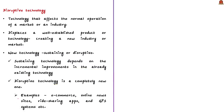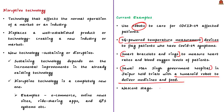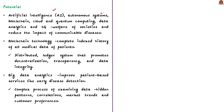According to the editorial, disruptive technology is already being used in the fight against the pandemic. Some hospitals use robots for care of COVID-19 patients. Hospitals in China use 5G-powered temperature measurement devices to flag patients with COVID-19 symptoms. Hospitals also use smart bracelets and rings to measure heart rates and blood oxygen levels. Even in India, the Sawai Man Singh Government Hospital in Jaipur held trials with humanoid robots to deliver medicines and food to COVID-19 patients. New technologies like AI, autonomous systems, blockchain, cloud and quantum computing, data analytics, and 5G can improve societal welfare and reduce the impact of communicable disease.